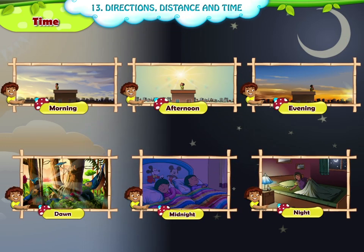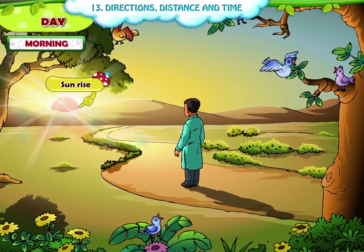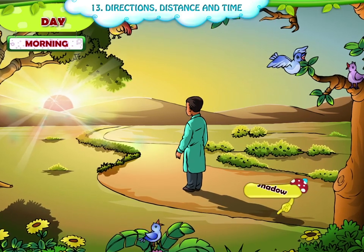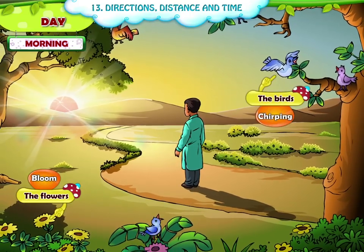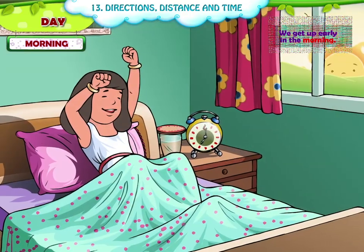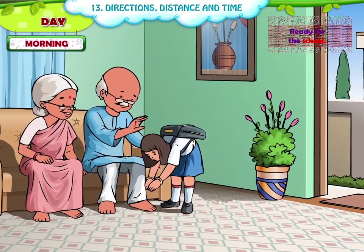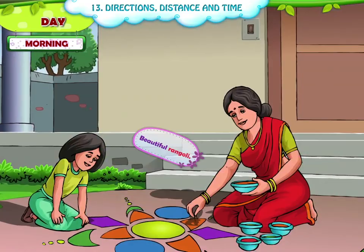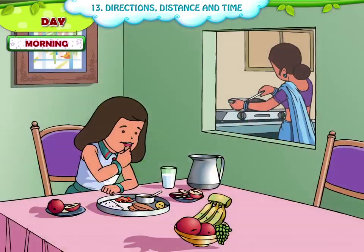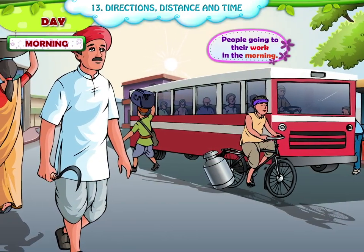Morning. It is the time when the sun rises in the east. Our shadow is longer in the morning. The flowers bloom and the birds start chirping. We get up early in the morning, brush our teeth, take a bath and get ready for school. Mom sprinkles water in front of the house and makes a beautiful rangoli. After that, we have our breakfast. We can also see people going to their work in the morning.